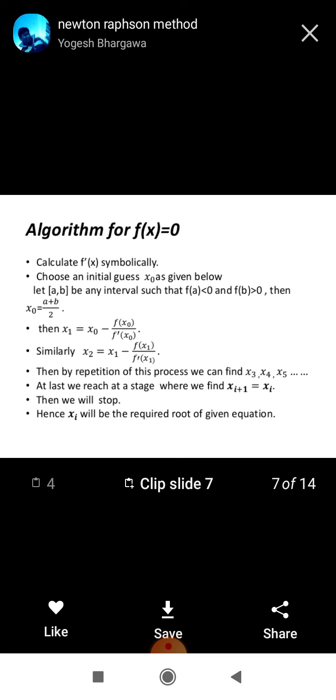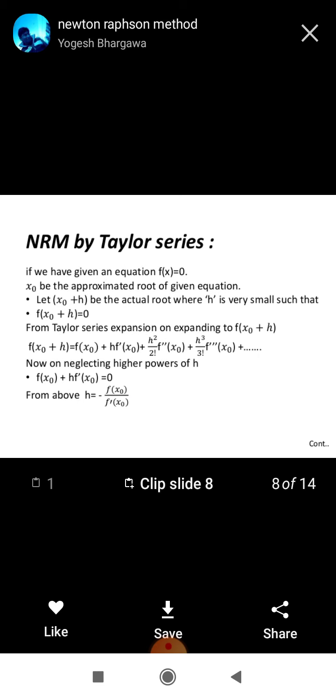Then x1 equals x0 minus fx0 upon f prime x0. Similarly x2 equals x1 minus fx1 upon f prime x1. Then by repetition of this process, we can find x3, x4, x5, dot dot dot xi plus 1. Then we will stop. Hence xi will be the required root of the given equation.